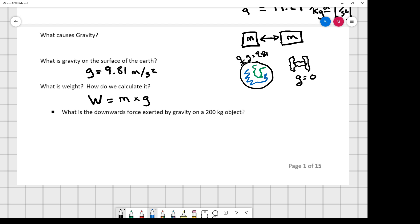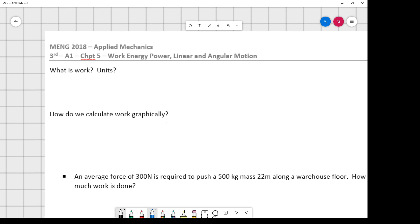What's the downwards force exerted by gravity on a 200 kilogram object? So, gravity pulling down, here's my 200 kilogram object, and that's going to create some weight. So weight is equal to mass times gravity, 200 kilograms times 9.81 meters per second squared, 1962 kilogram meters per second squared, which is also equivalent to a newton.